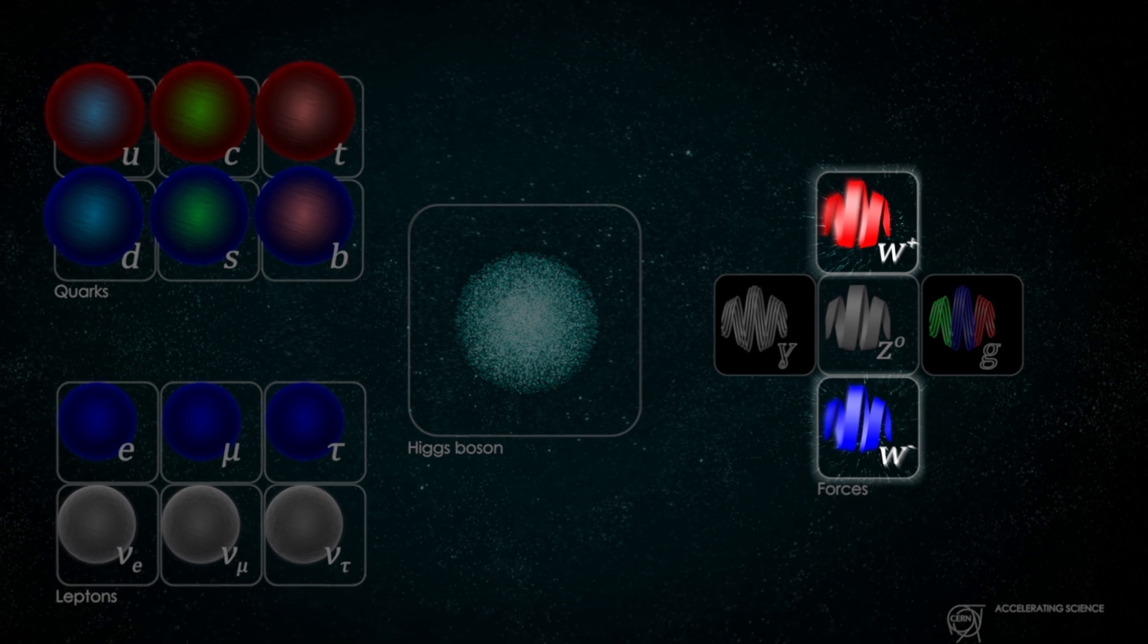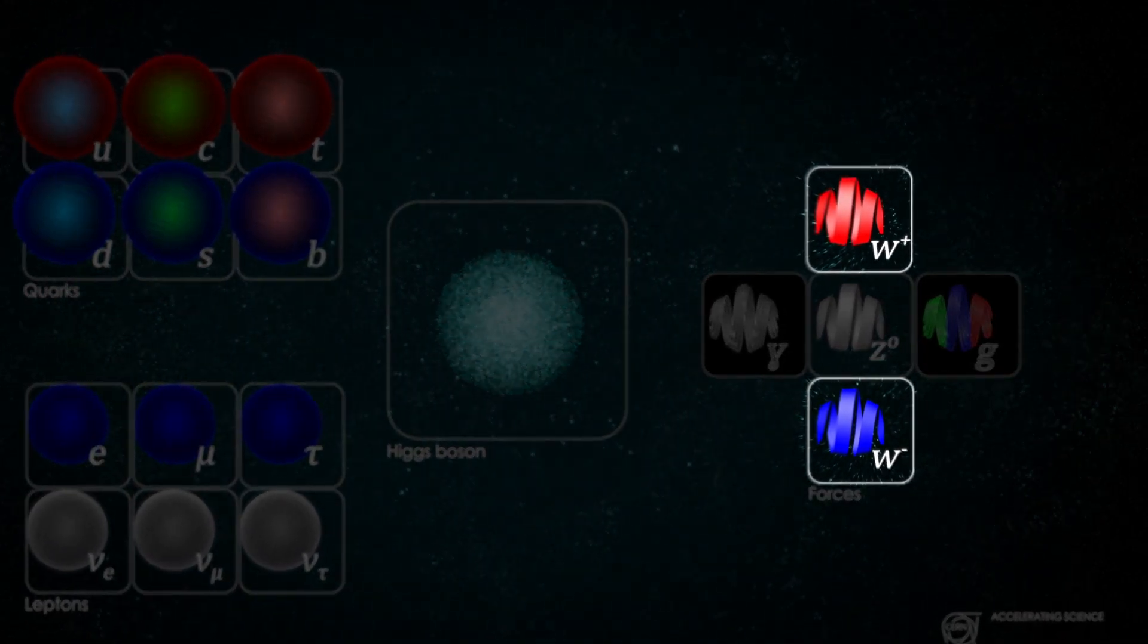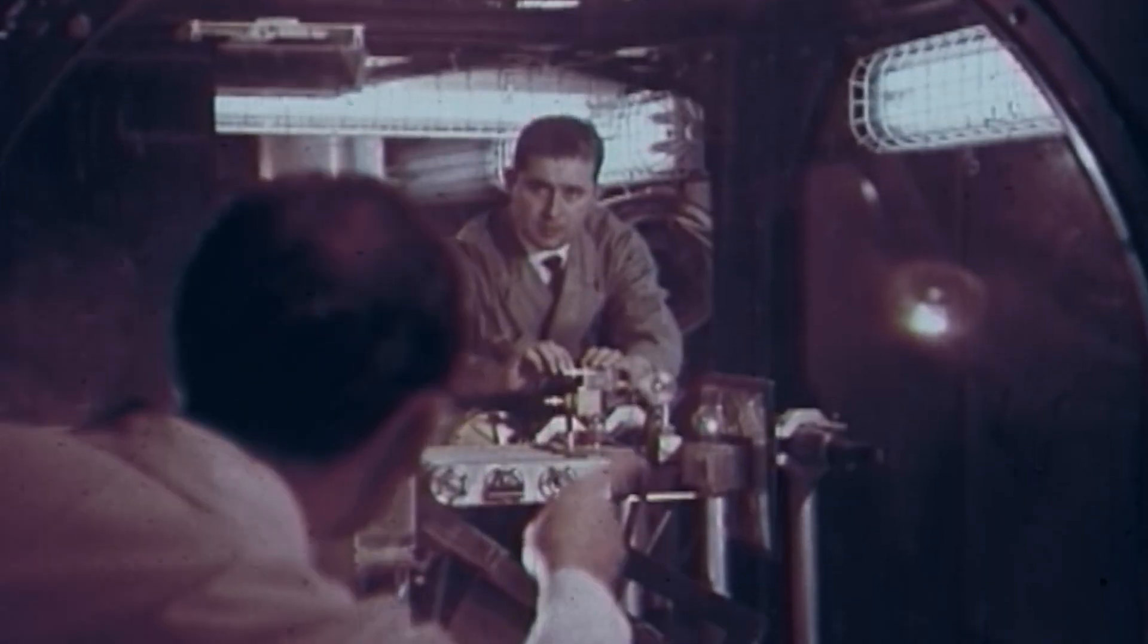The W boson is one of the particles responsible for transmitting the weak interaction. It was discovered in 1983 at CERN by the UA1 and UA2 experiments on the SPS Proton-Antiproton Collider, leading to a Nobel Prize for CERN's Carlo Rubia and Simon van der Meer.